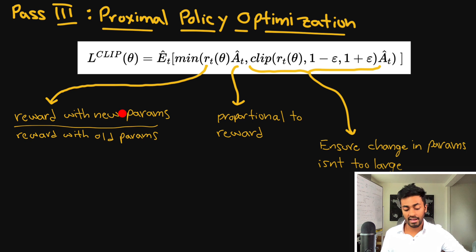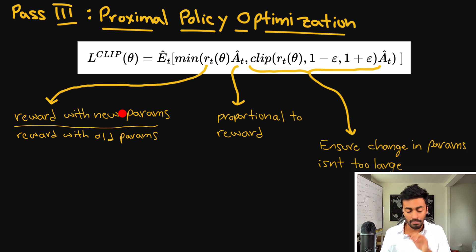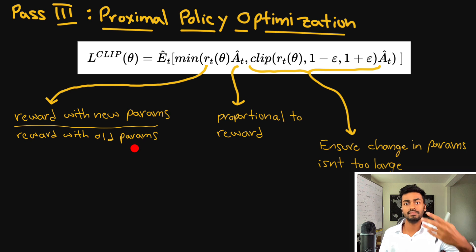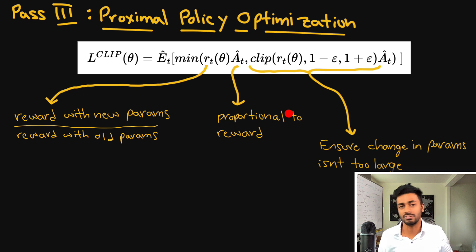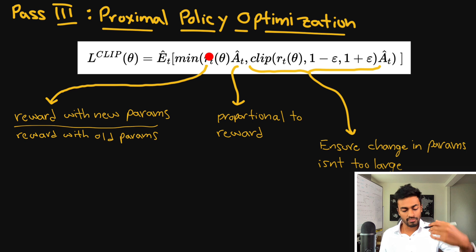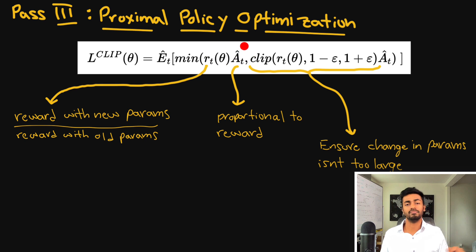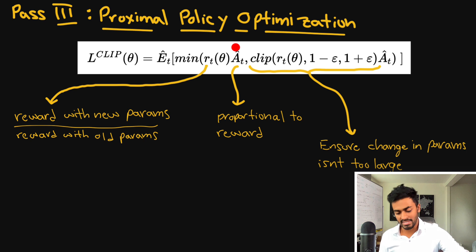A is the advantage function — a reinforcement learning concept that assesses how high quality the output was with respect to the input, proportional to the reward. The product of R and A is very high when the response is good, and can go negative when the response is bad for the given input. We want to maximize this product, which is exactly what policy optimization techniques do — they maximize the total reward.